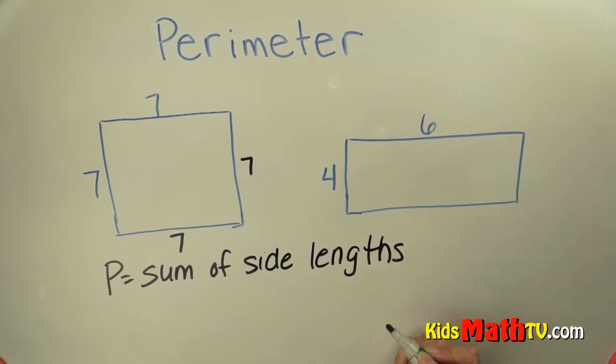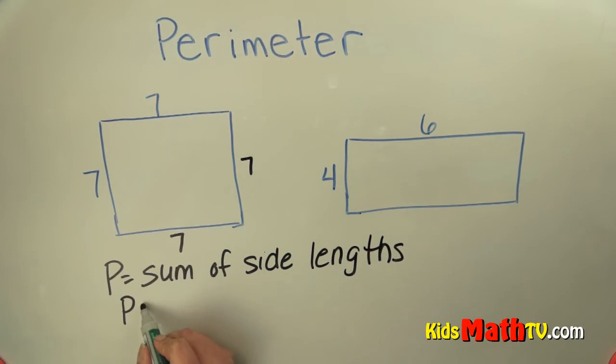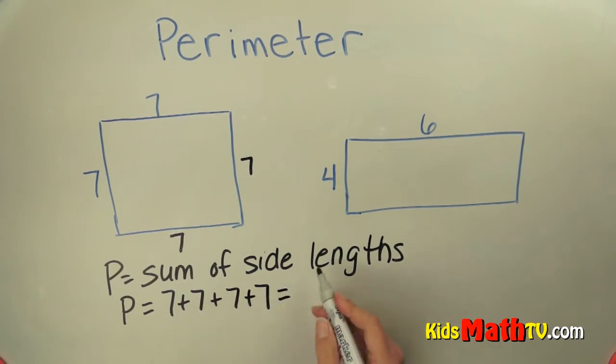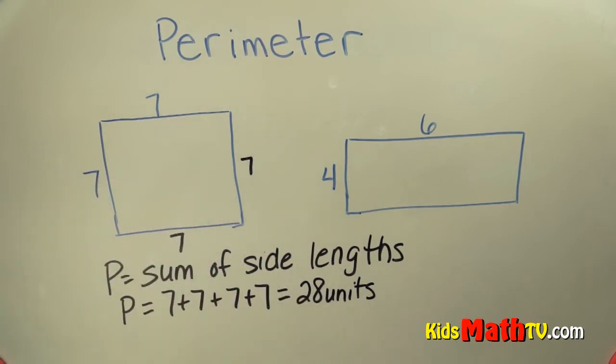The perimeter equals the sum of the side lengths. So for this one, I would find the perimeter equals 7 plus 7 plus 7 plus 7, or that's also 7 times 4, which is 28 units.